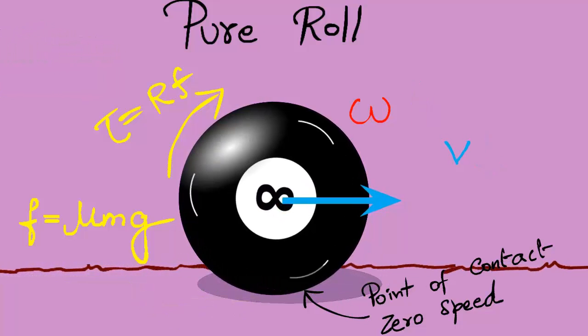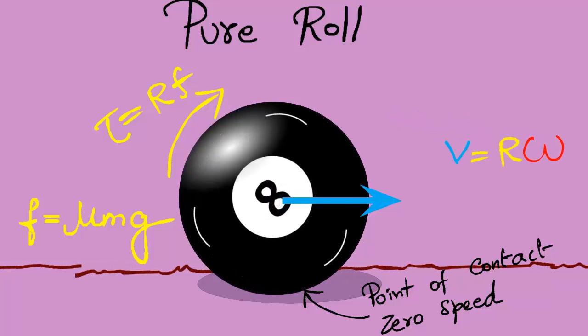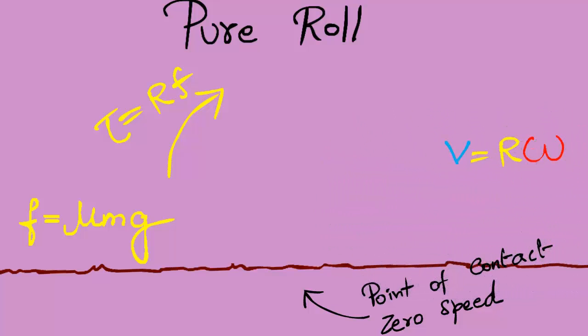Since now the friction is gone, there is no more opposition. So the ball will continue with this pure roll forever and ever. Now we have the complete picture.